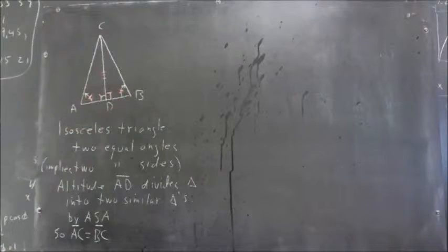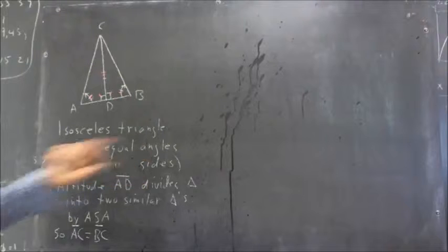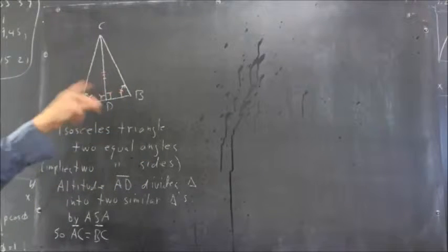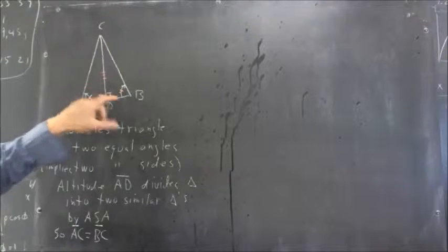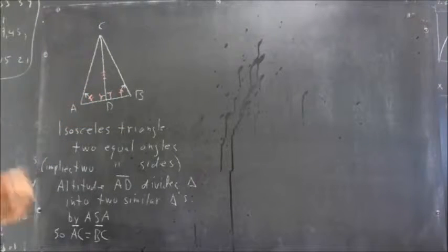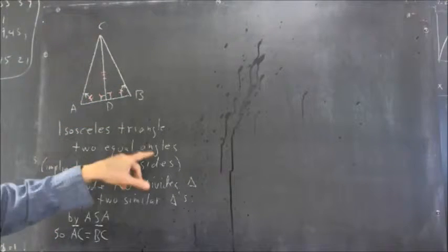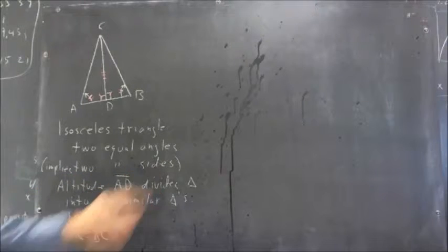I'll go with the definition of two angles, so two equal angles. Now, here are the equal angles. So I've put a couple of tick marks in these angles to show that they're equal. And I'm going to say the two equal angles implies two equal sides.